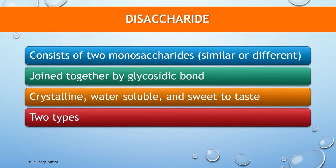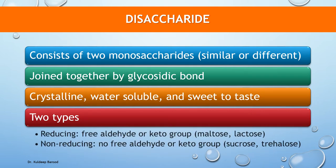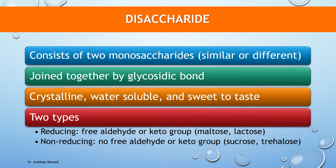Disaccharides are of two types: reducing and non-reducing. Reducing disaccharides have a free aldehyde or keto group; examples are maltose and lactose. Non-reducing disaccharides have no free aldehyde or keto group; examples are sucrose and trehalose.